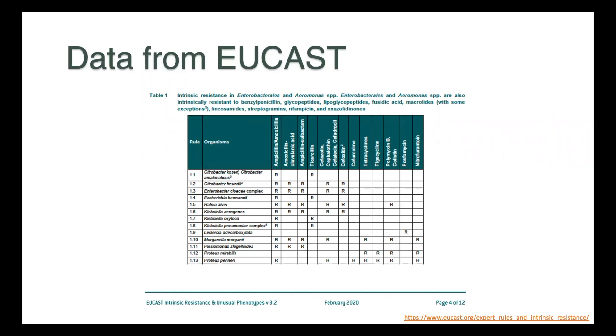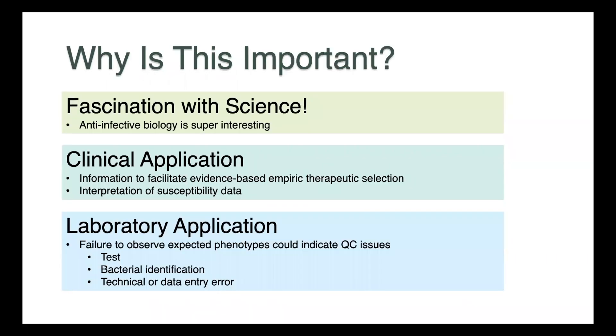In the table, you can see the species-specific intrinsic resistance that's recognized. So Enterobacter cloacae, for instance, is intrinsically resistant to ampicillin amoxicillin, amoxicillin-clavulanate, and ampicillin-sulbactam, as well as several of our cephalosporins. So why is this information important?